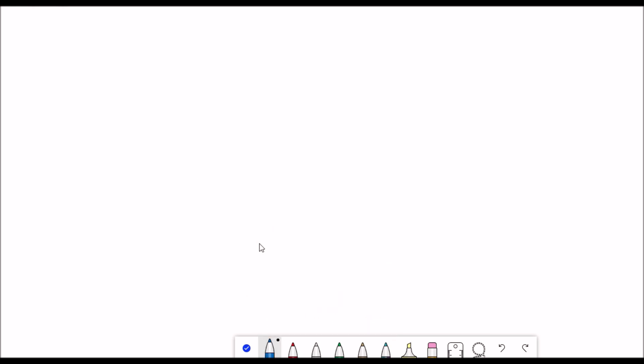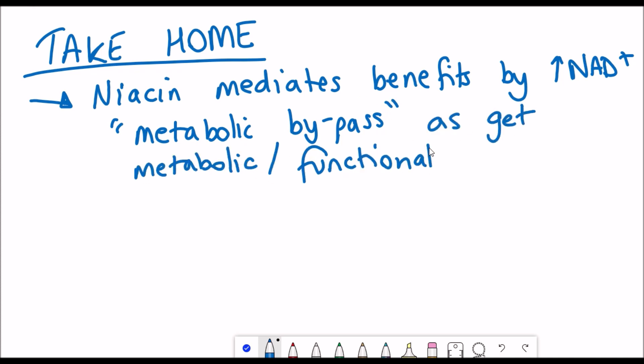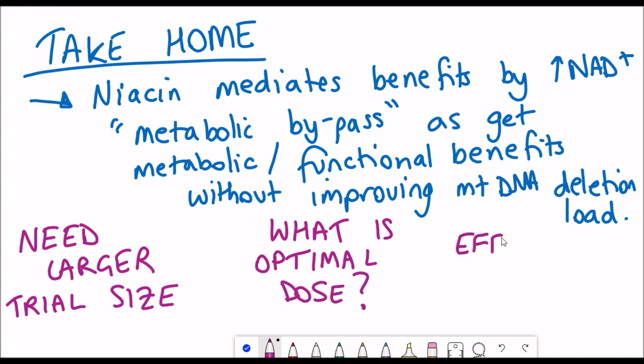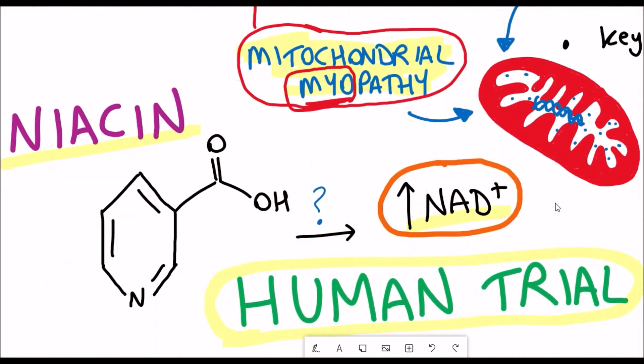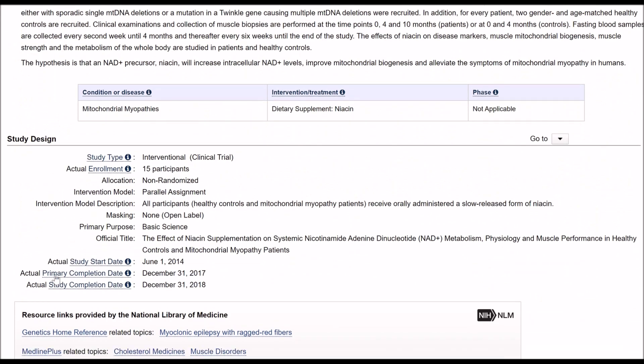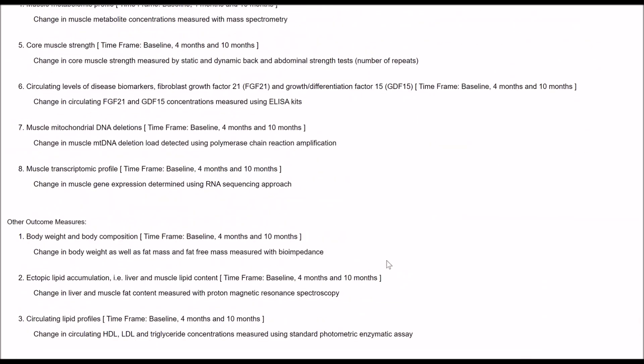So what can we actually take away from these results so far? Well, this study very much shows that niacin is effective at increasing the NAD plus levels. And the benefits that they saw with the mitochondrial myopathy patients is thought to be by a metabolic bypass, because they see these improvements in the metabolic functions without seeing improvements in the DNA deletion load of the mitochondrial DNA. But the problem is, there was only five patients, they need to do it in a larger trial size. And also try and see what the optimal dose is to try and minimize these side effects. But I think overall, this has been a pretty exciting study so far. Obviously, it's been done in patients. And if you go into the clinical trial website, which I'll link in the description, you can see more detail about the different measurements that they took. So hopefully this was useful. And as always, thanks for listening.